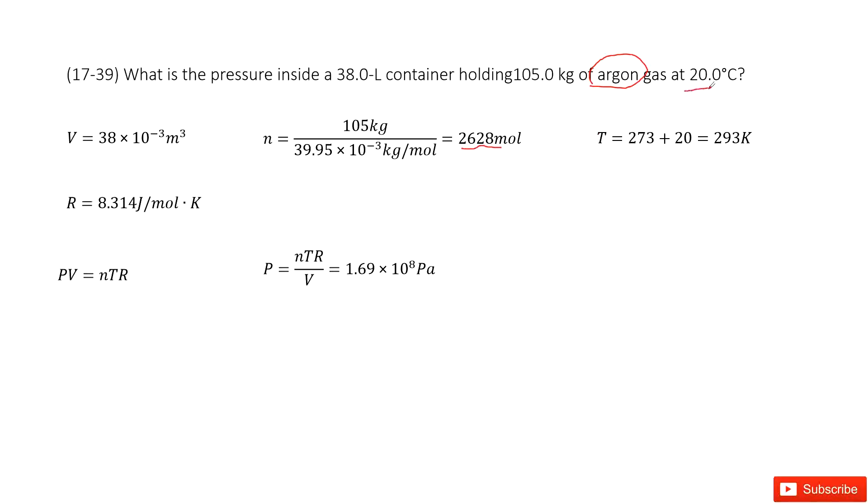And then the temperature is given as 20 degrees centigrade. Convert the unit to Kelvin. Now we look at the ideal gas law. In this way we can write it in this form. Write the function of the pressure P as nTR divided by V. R is a constant.